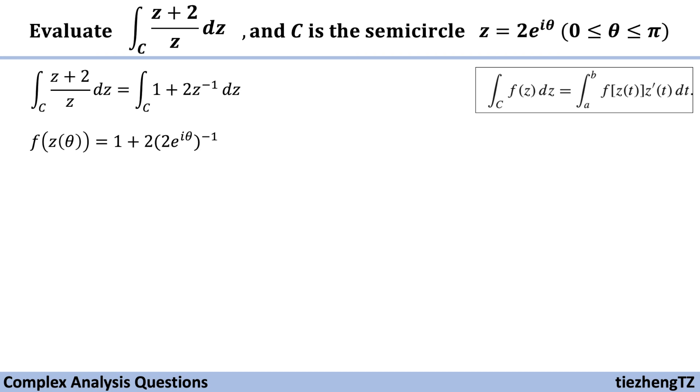And in our case, f(z(theta)) is 1 plus 2 times 2 times e to the power of i theta, the whole part to the power of minus 1. And z'(theta) is 2 times e to the power of i theta, and then times i.